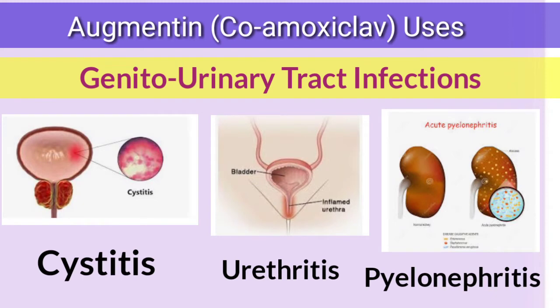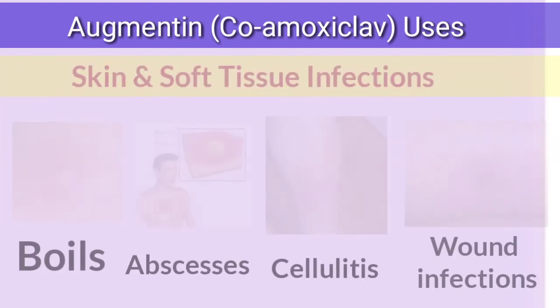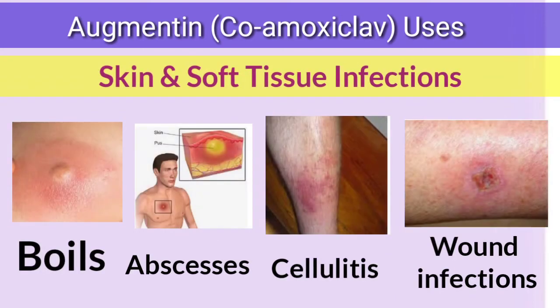Augmentin is also used for genitourinary tract infections, for example cystitis, urethritis, and pyelonephritis, as well as skin and soft tissue infections such as boils, abscess, and cellulitis.